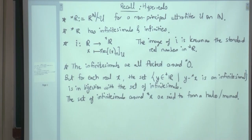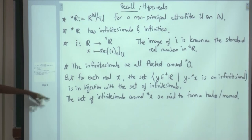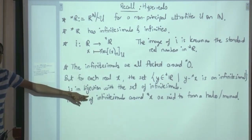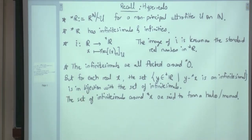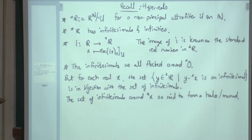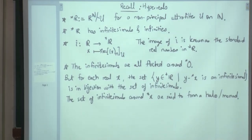The non-standard part around a standard real number lies in this halo or monad. For example, if you have the number 2 plus 1/n — the equivalence class of that sequence — then its standard part is star 2, and the non-standard part is 1/n, the difference between them. That is how you set up the language.